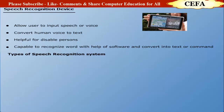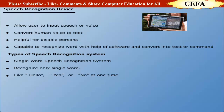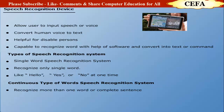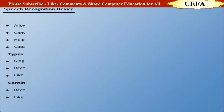Types of speech recognition system: The first type is the single word speech recognition system, which recognizes only single words like hello, yes, or no at one time. The second type is the continuous word speech recognition system, which recognizes more than one word or a complete sentence, for example, 'hello, how are you' at one time.